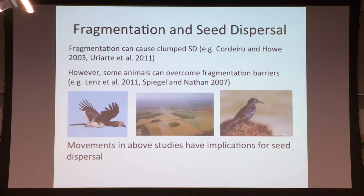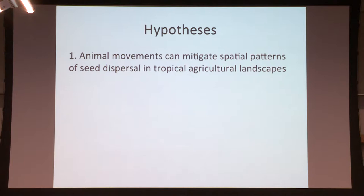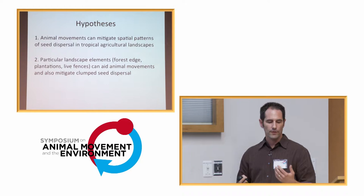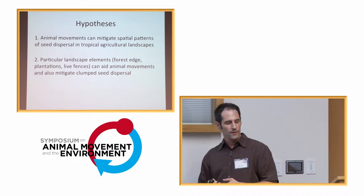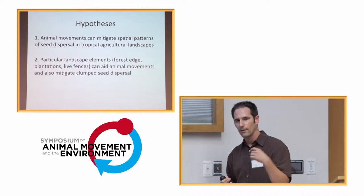These animals can commute among fragments and disperse seeds, and hopefully have the highest potential of dispersing seeds more evenly across the landscape. My hypotheses are that larger animal movements can mitigate clumped or aggregated patterns of seed dispersal in agricultural landscapes. Landscape elements such as forest edge, plantations, and live fences can help animals move and connect to distant fragments, and these elements helping movement should aid seed dispersal as well.